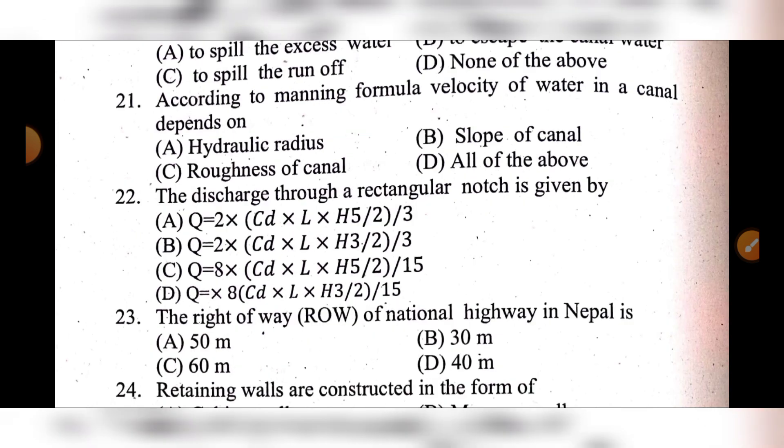Question 21: According to Manning's formula, the velocity of water in a canal depends on — option A: hydraulic radius, option D: all of the above. The answer is option D: all of the above — Manning's formula shows velocity depends on hydraulic radius, roughness of canal, and slope of the canal.